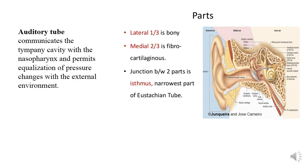Auditory tube communicates the tympanic cavity with the nasopharynx and permits equalization of pressure changes with the external environment. The auditory tube consists of three parts: bony part, isthmus, and cartilaginous part. The bony part is lined by ciliated simple low cuboidal epithelium without glands. The isthmus is a narrowing at the interface of the bony and cartilaginous parts. The cartilaginous part is formed by elastic and hyaline cartilage, and its walls are lined by ciliated pseudostratified columnar epithelium with goblet cells and tubular glands.